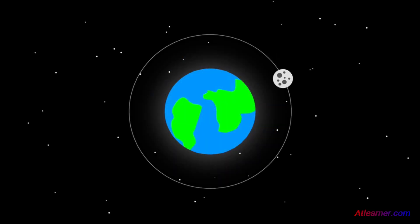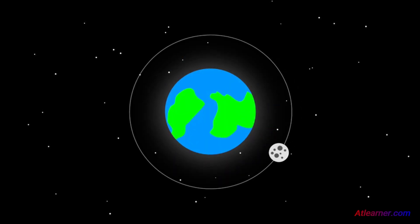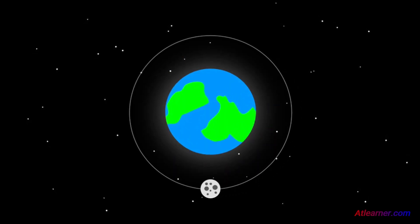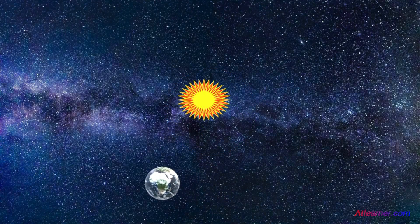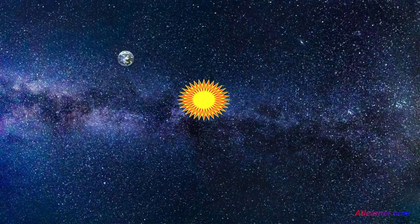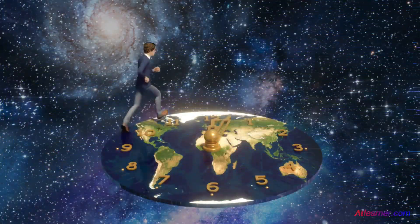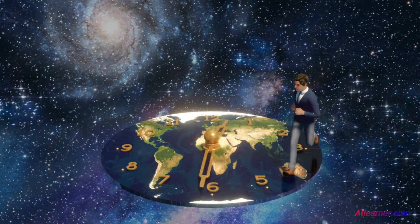If the moon completes one cycle around the Earth, we call it a month. Similarly, if Earth completes one cycle around the Sun, then we call it a year. And the counting of time continues like this. This is how we simply know the time.